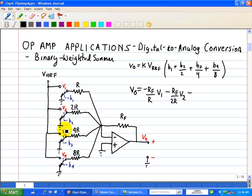We have V3, that's negative RF divided by 4R times V3. And then finally, for V4, we have negative RF times V4 divided by 8R.